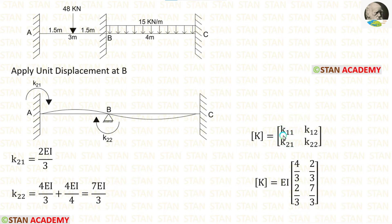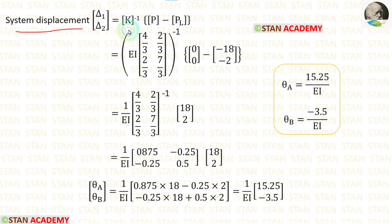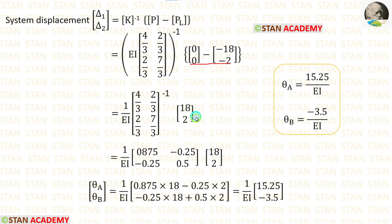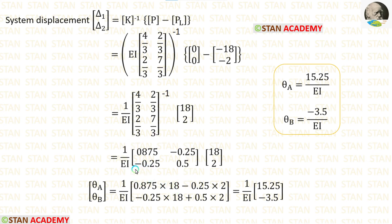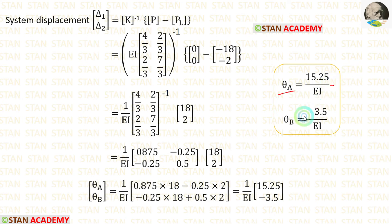Both rows of the stiffness matrix are now calculated. EI is constant, so it is kept outside. Applying all the values in the formula, we add the P and PL matrices, then find the inverse of the stiffness matrix using a calculator, and multiply the matrices to get the slope values. Theta A = 15.25/EI and theta B = −3.5/EI.